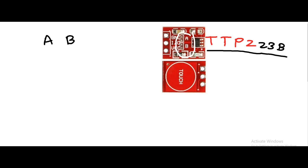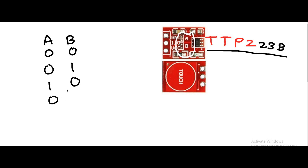There is logic A and B on the board. If A is short-circuited it is called logic one, and if it is open it is called logic zero. Depending on that, there are four different modes: zero-zero, zero-one, one-zero, and one-one. There are four different modes for how we can use this touch switch.